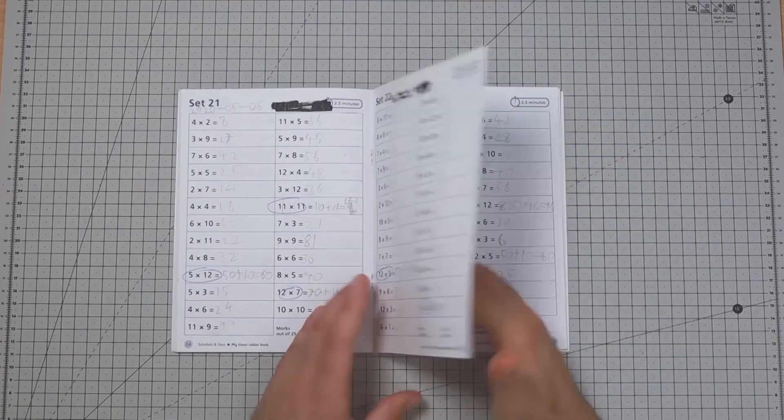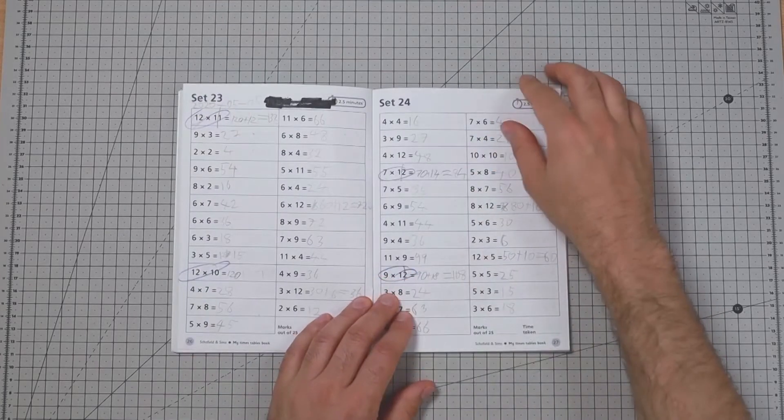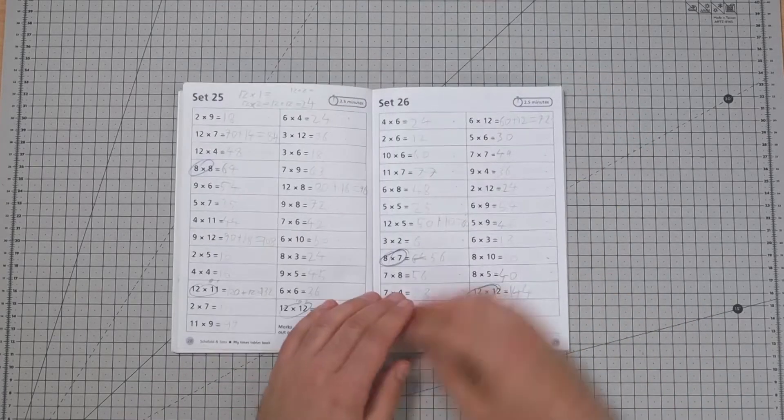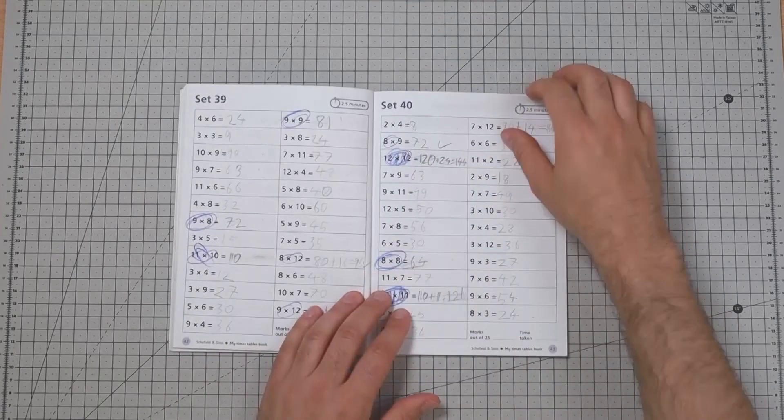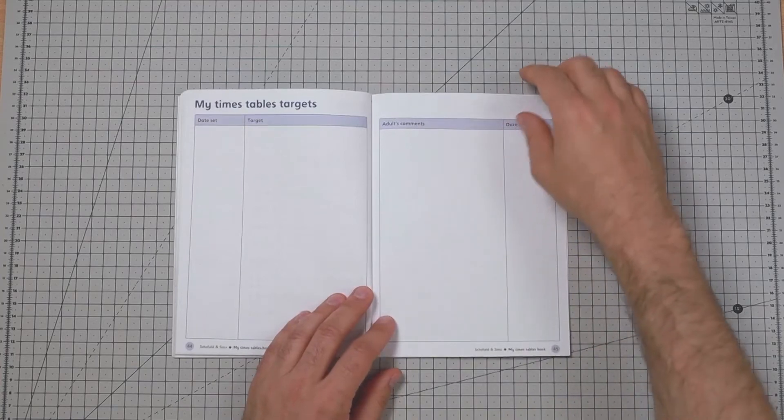So just help your child if they haven't seen that, whichever way your school happens to teach it. Not much to see here, just keeps going and going, some progress charts and notes at the back.